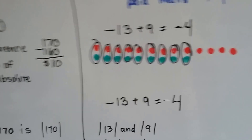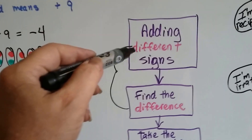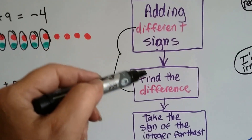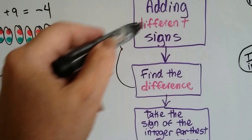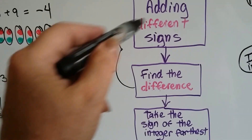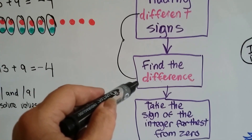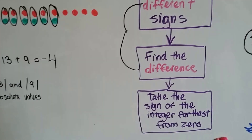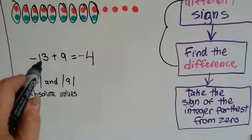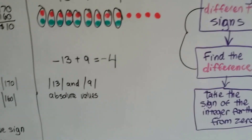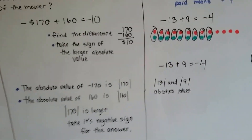We take the sign of the larger absolute value — that's 13 — so the answer has a negative sign: negative 4. Just like we got with the zero pairs. Remember: when adding integers with different signs, find the difference, then take the sign of the integer that's farthest from zero. The 13 was farther from zero, so we took its negative sign and got negative 4.